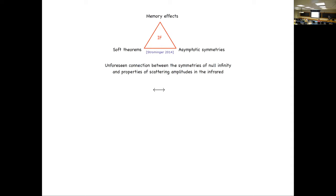We have known for quite a long time that the asymptotic symmetry group of spacetimes is infinite dimensional, and only recently people have made a connection — particularly through the work of Strominger — between this infinite group of symmetries and soft theorems: properties of the scattering amplitudes in the infrared. This is what has been dubbed the infrared triangle.